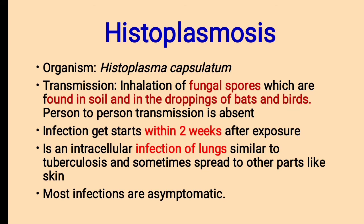4. Histoplasmosis. Histoplasmosis is caused by the organism Histoplasma capsulatum. Disease transmission is mainly through the inhalation of fungal spores found in soil and in the droppings of bats and birds. Person-to-person transmission is absent. Infection begins within two weeks after exposure — two weeks is the incubation period. Histoplasmosis is an intracellular infection of the lungs, similar to tuberculosis, and sometimes spreads to other parts like the skin.